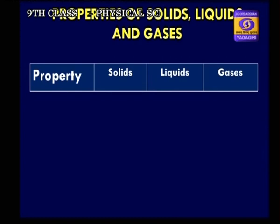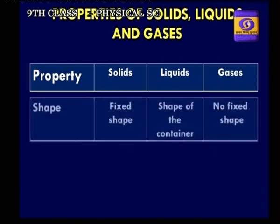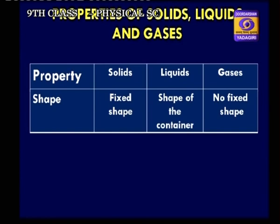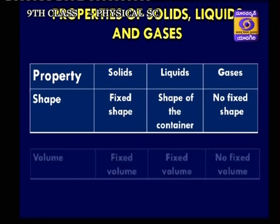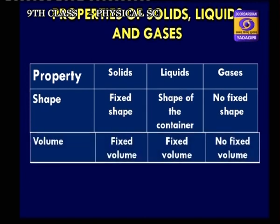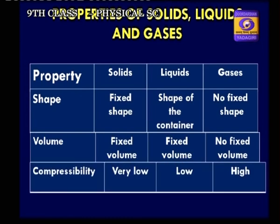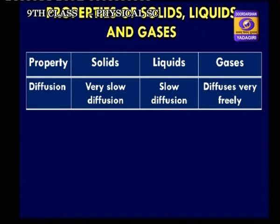Properties of solids, liquids and gases: Shape — solids have fixed shape, liquids have the shape of the container, gases have no fixed shape. Volume — solids have fixed volume, liquids have fixed volume, gases have no fixed volume. Compressibility — solids are very low compressible, liquids are low compressible, gases are highly compressible. Diffusion — solids undergo diffusion very slowly, liquids undergo slow diffusion, gases diffuse very freely.